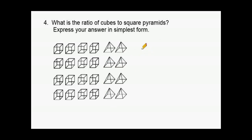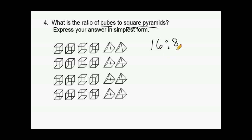For this problem, we have to determine the ratio of cubes to square pyramids. We count the cubes first — we have a total of 16 cubes — and we have a total of eight square pyramids. The greatest common factor of 16 and eight is eight. So we divide eight into 16, which is two, and we divide eight into itself, which is one.